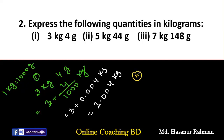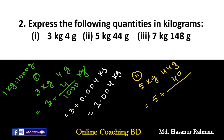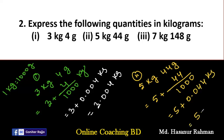Number two: five kilograms, forty-four grams. To convert forty-four grams into kilograms, we divide forty-four by one thousand to get 0.044. So the final answer is five plus 0.044, which equals 5.044 kilograms.